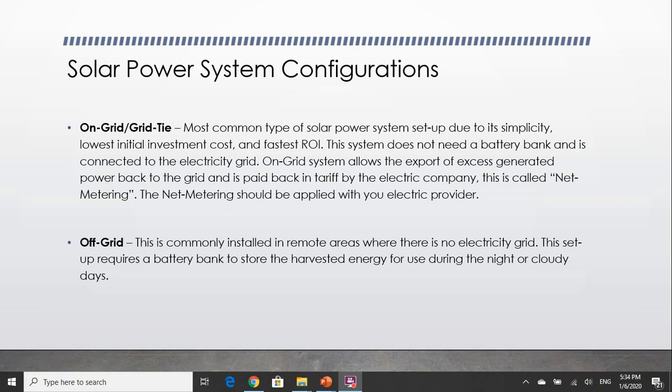The second type of solar power system is the off-grid system. The off-grid system is typically installed in remote areas where there is not a power grid nearby. This setup requires a battery bank to store the harvested solar energy during the day for use during the night or on days where it is very cloudy and the amount of sunlight is not enough to power your home.